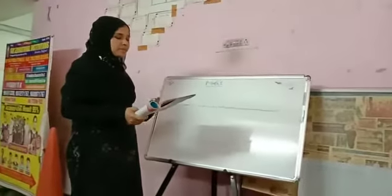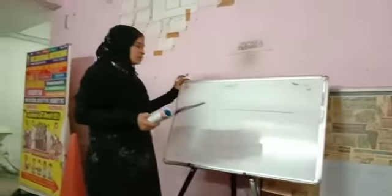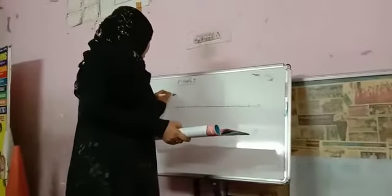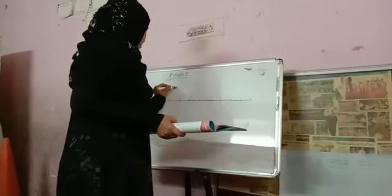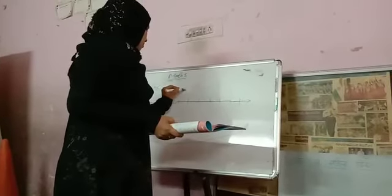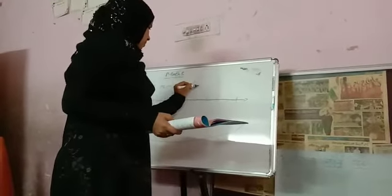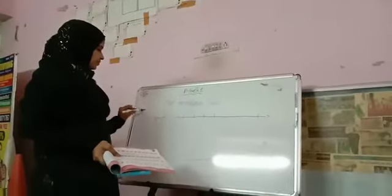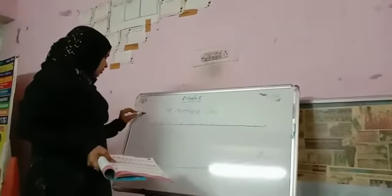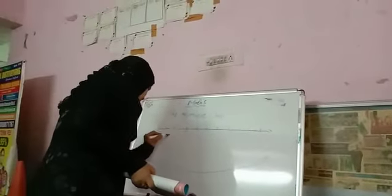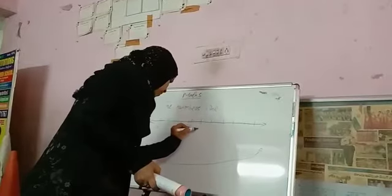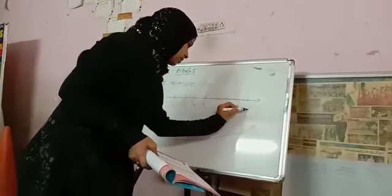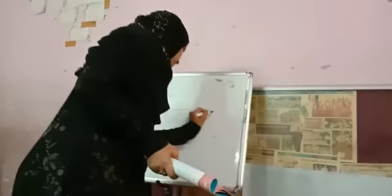Today in math class, we're learning about the number line. First, let me show you the numbers: zero, one, two, three, four, five, six, seven, eight, nine, after ten.